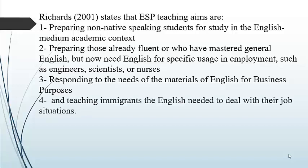The fourth aim is teaching immigrants the English needed to deal with their job situation. As ESP teachers, you can be asked to design a course for foreigners who need English for their job — for instance, people who have to move abroad for work and need to learn English to perform their job successfully. You have to bear in mind the ESP teaching objectives as Richards proposes.